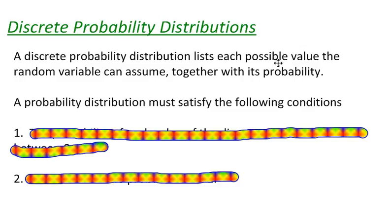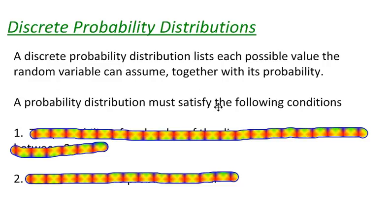When you are working with probability distributions, and in this case discrete probability distributions in particular, it's important that you know two conditions. It's kind of like a checkpoint. When you get finished creating your probability distribution, you can check to make sure that you've got things the right way. In a discrete probability distribution, the distribution must satisfy a couple of conditions.